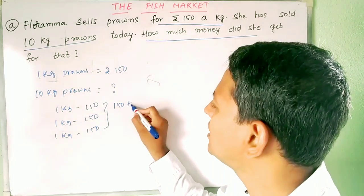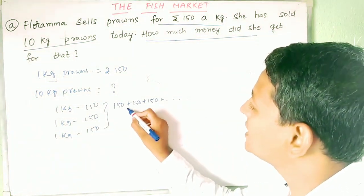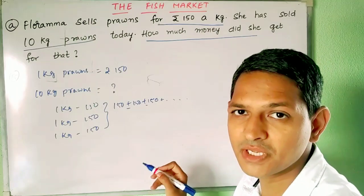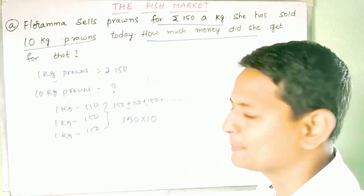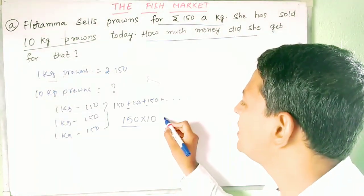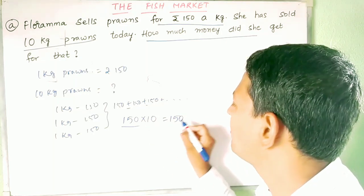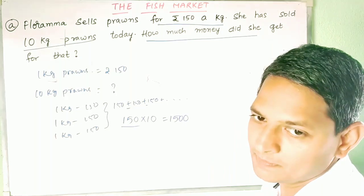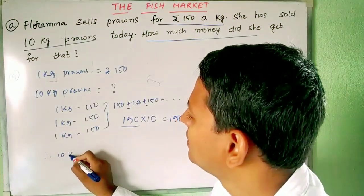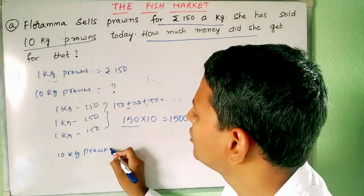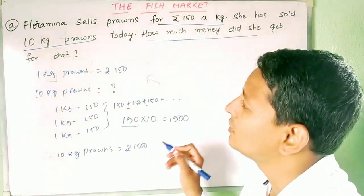We are doing repeated addition: 150 plus 150 plus 150, ten times. The shortcut for repeated addition is multiplication. So we simply multiply 150 by 10. Whenever a number is multiplied by 10, we just write the number and place a zero after it. So 150 multiplied by 10 equals 1500 rupees. Therefore, 10 kg of prawns will cost rupees 1500.